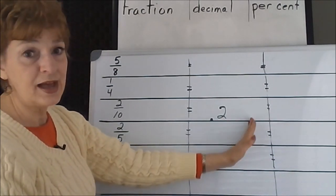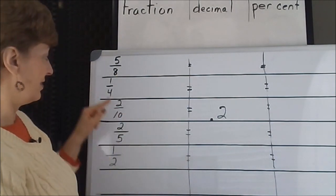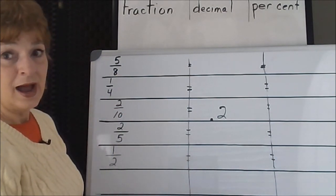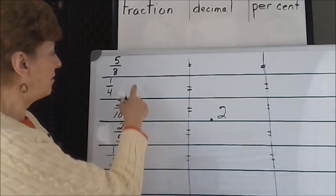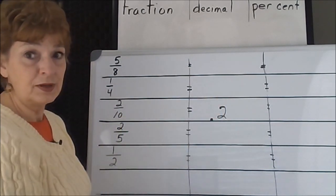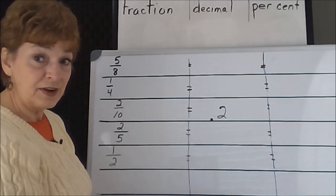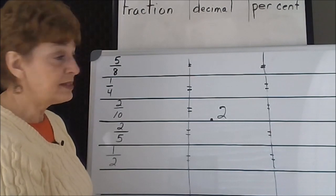Tenths, hundredths, thousandths. These are eighths. Those are fourths. How do we get our fraction to become a decimal? It's actually fairly easy. It's a division step.